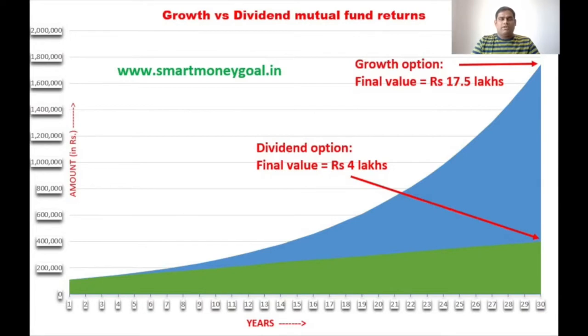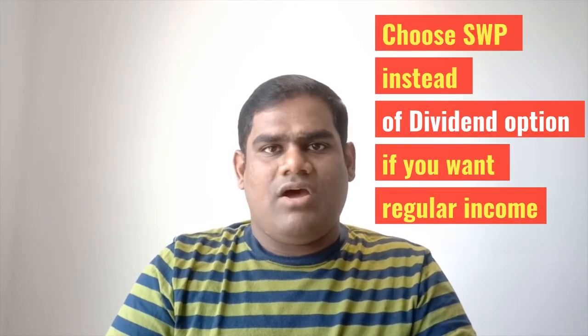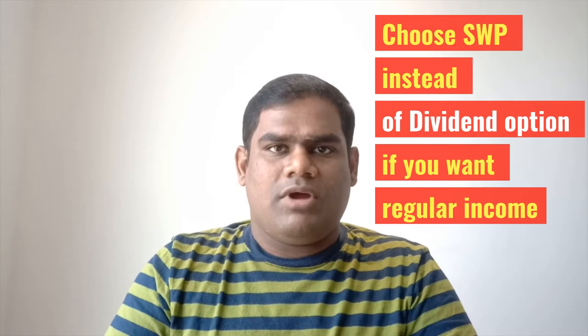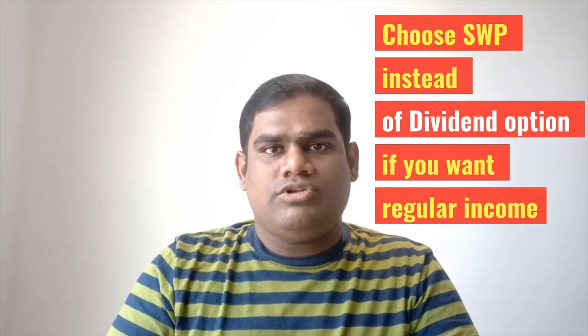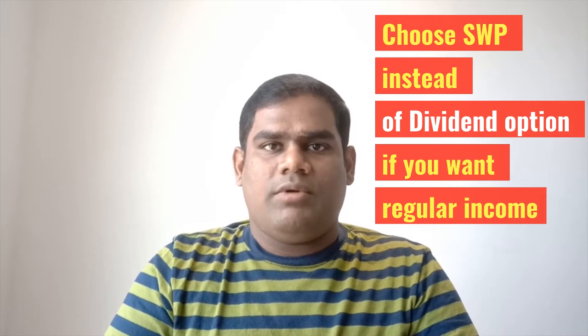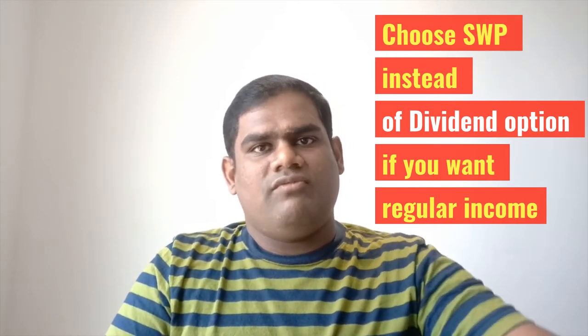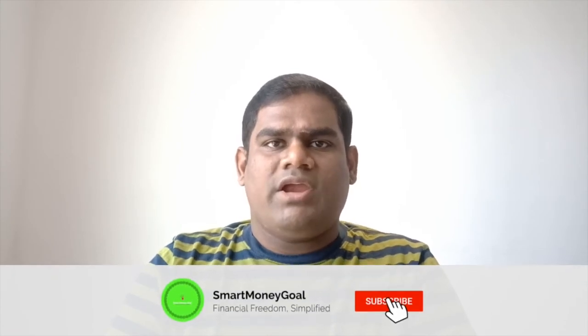If you buy into a growth fund, and you are looking at dividend funds versus growth mutual funds — if you invest in a growth fund but want regular income, you can choose a Systematic Withdrawal Plan, SWP, where you withdraw a fixed amount each month. You can invest through mutual fund distributors and set up a monthly or quarterly withdrawal schedule.